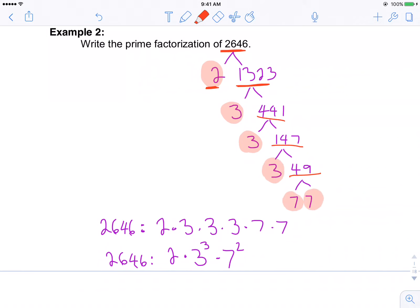And I simply list them out. 2 times 3 times 3 times 3 times 7 times 7. Or if needed, if I need to write it down using exponents, then it would be 2 times 3 cubed. There are three 3's. 3 cubed times 7 squared because there are two 7's.